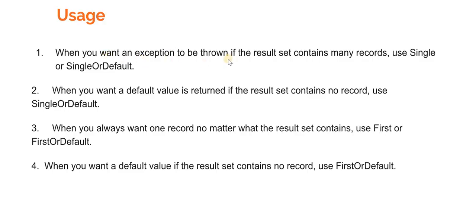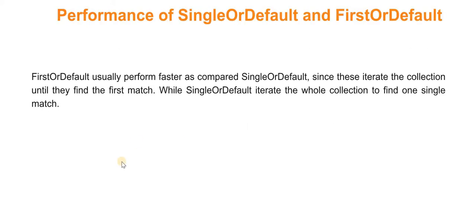Summary: First, when you want an exception thrown if the result set contains many records, use Single or SingleOrDefault. Second, when you want a default value returned if the result set contains no record, use SingleOrDefault. Third, when you always want one record no matter how many results, use First or FirstOrDefault - if there are multiple results it will always return the first one. Fourth, when you want the default value if the result contains no record, use FirstOrDefault. Regarding performance: FirstOrDefault usually performs faster than SingleOrDefault, since First iterates the collection only until it finds the first match, while SingleOrDefault must iterate the whole collection to verify there is no duplicate.